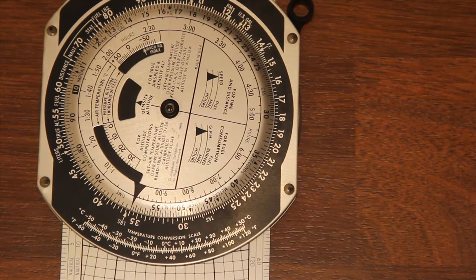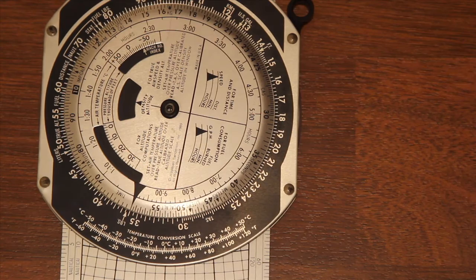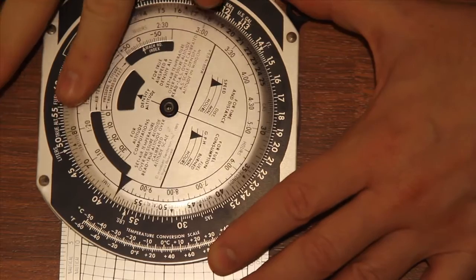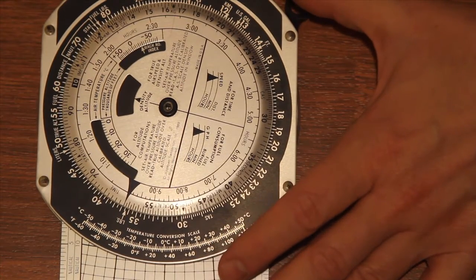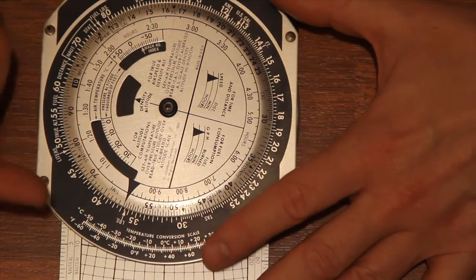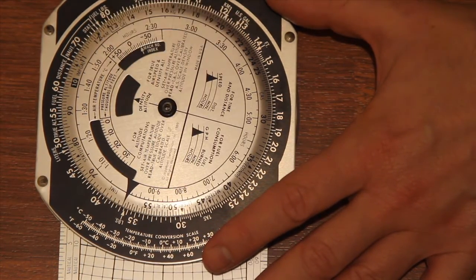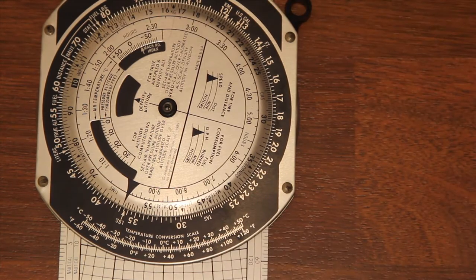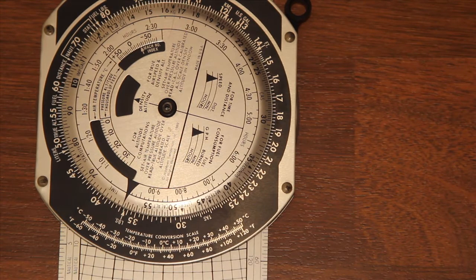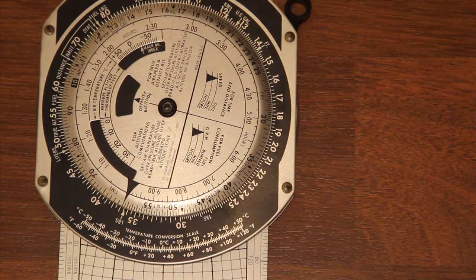So speed is calculated as distance divided by time. On this device, whenever you use the black pointer here, it's referring to speed. So to get speed, you need to match up the distance on the black scale and the time on the inner scale. So if we had 360 kilometers traveled in a period of two hours, you can work that out quickly in your head: 360 divided by two is 180 kilometers per hour.